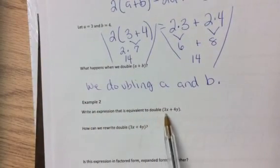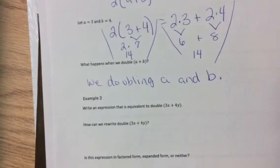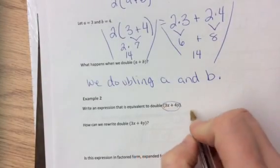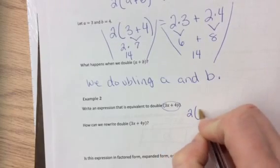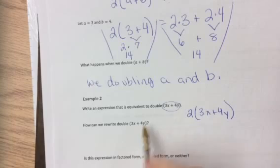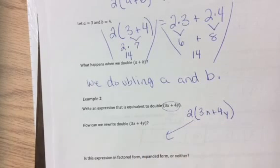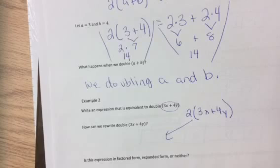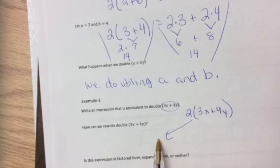Write an expression that is equivalent to double 3X plus 4Y. So what we could do is we're going to have 2 of it. So your expression can be 2 times 3X plus 4Y. How can we rewrite that here? And I just did that for you here. Okay, so double is the same as multiplying by 2.